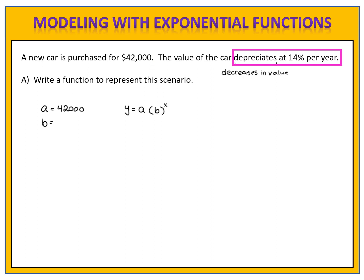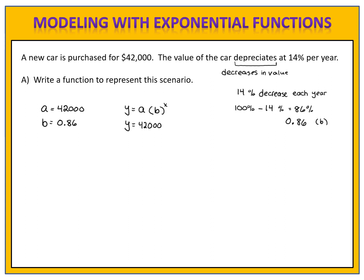b is the factor or the multiplier. We decreased at a rate of 14% per year, meaning we had 100% and took 14% away every year, which left us with 86% remaining. We convert 86% to a decimal — 0.86 — and now we have the value of b. The function is y equals 42,000 times 0.86 to the x power, which can determine the value of the car after x years.